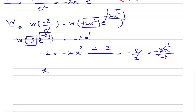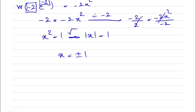So basically, our x squared is equal to 1, which means if we take the square root on each side, we have the absolute value of x is equal to 1. So our x is equal to plus or minus 1. So two answers so far — let's check if both work.